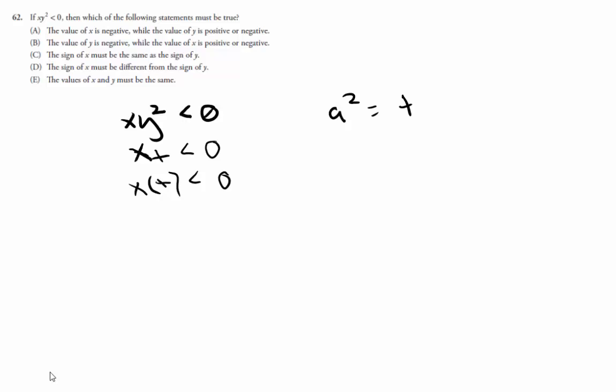And so if x times a positive number is going to be less than 0, then x must be a negative number, such that the product of xy² is negative. So that means the value of x is negative.